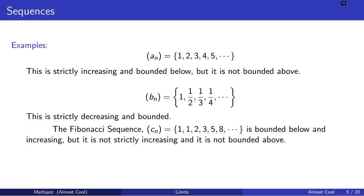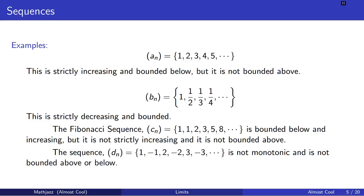Here's a fourth sequence: 1, negative 1, 2, negative 2, 3, negative 3, and so on. This sequence is not monotonic and not bounded above or below.